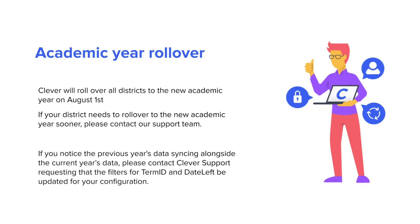The process of transitioning from one academic year to the next is automatically managed by Clever. Clever will roll over all districts on our platform to the new academic year on August 1st. If your district needs to roll over to the new academic year sooner, simply contact our support team. If you encounter any issues with the academic rollover for your account, please contact Clever's support team and request that we update the term ID and date left for your configuration.